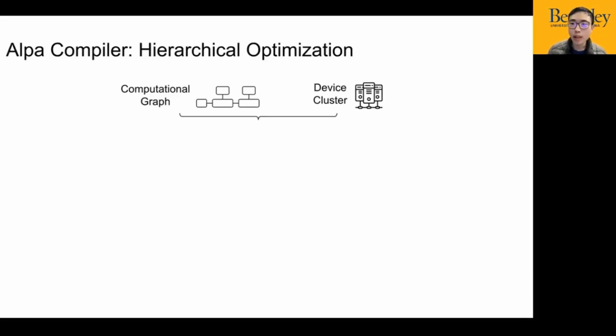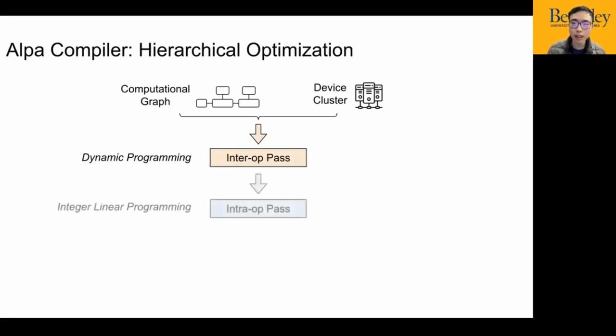More specifically, we first search for the inter-operator parallelism at the higher level. Then at the next level, we derive the best intra-operator parallelism strategy for each stage. We design the ALPA compiler based on the search space decomposition. The input of the compiler is a computational graph and a cluster specification. We design three compiler passes to do the optimization. The first inter-operator pass finds the best inter-operator parallelism strategy with dynamic programming. Later, the intra-OP pass finds the best intra-operator parallelism strategy with integer linear programming. The optimization is also hierarchical, which means the higher-level pass will call the lower-level pass multiple times and make decisions based on the feedback from the lower-level pass. Finally, the runtime orchestration pass will realize the parallelization plan and execute the strategy.